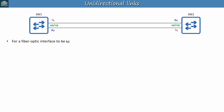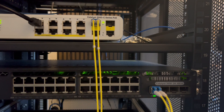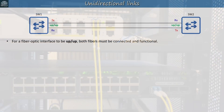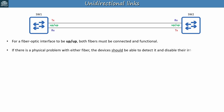For a fiber optic interface to be up-up, both fibers must be connected and functional. Look at this connection between two switches — they're connected by a fiber optic cable, and the two fibers are connected on both sides, so the link lights are green. If there is a problem with either fiber, the devices should be able to detect it and disable their interfaces. So if you disconnect or cut a fiber, SW1 and SW2 should detect it and disable their interfaces — the link is disabled entirely, not resulting in a unidirectional link.